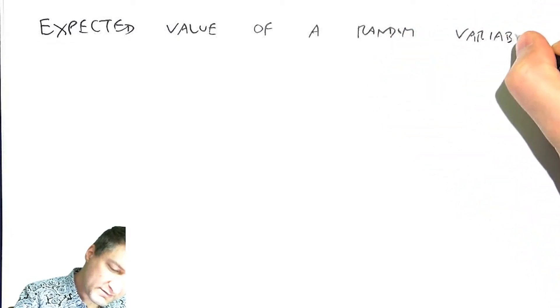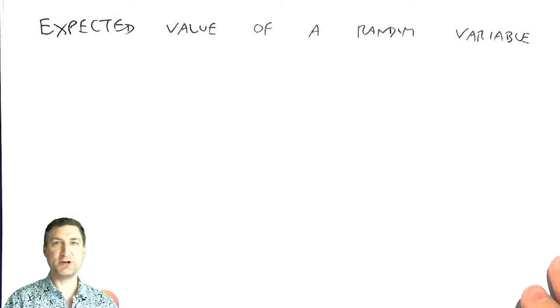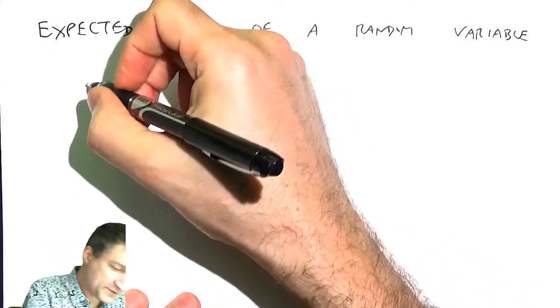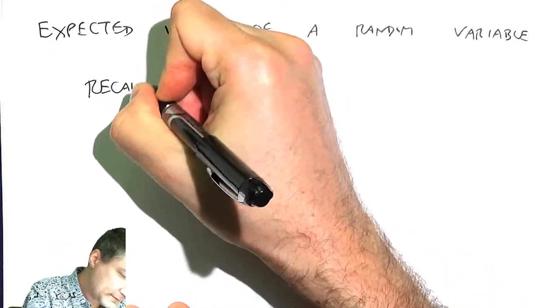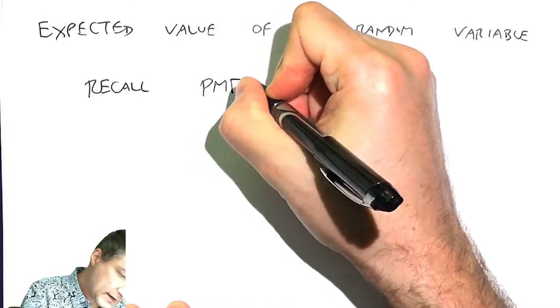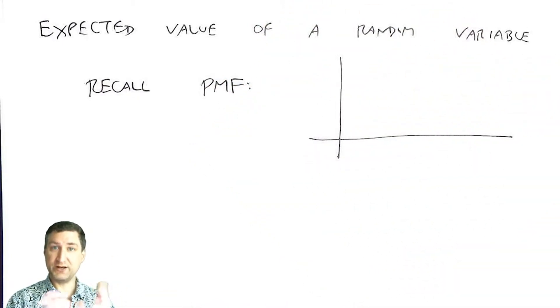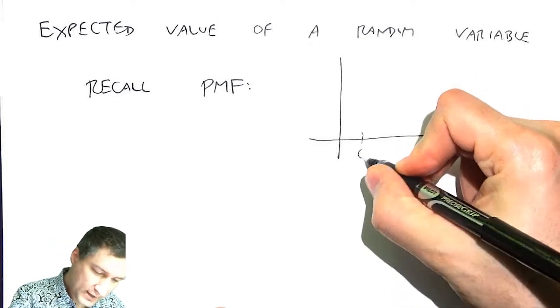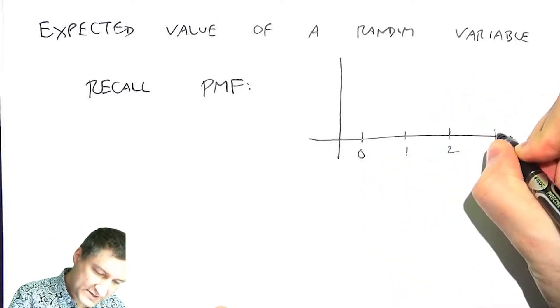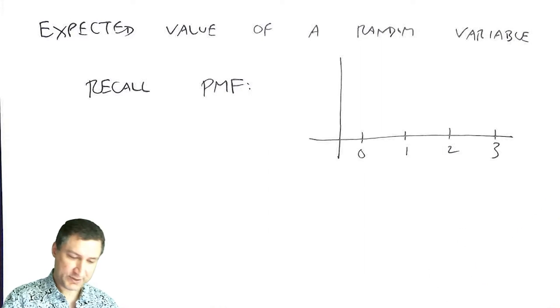And remember that in a couple of previous lectures, we talked about this really important concept called the probability mass function, or the PMF. And the PMF is basically, we have a random variable, which means we get a number after we do our experiment. And we have a bunch of possible numerical outcomes.